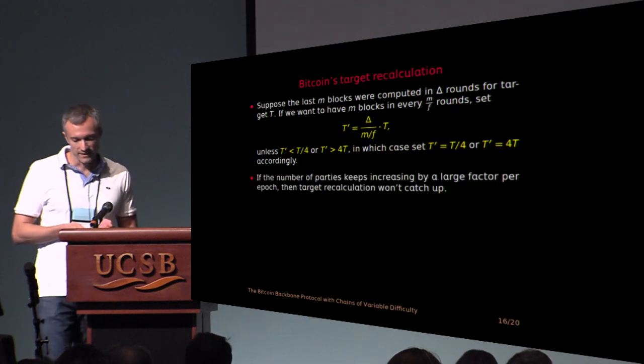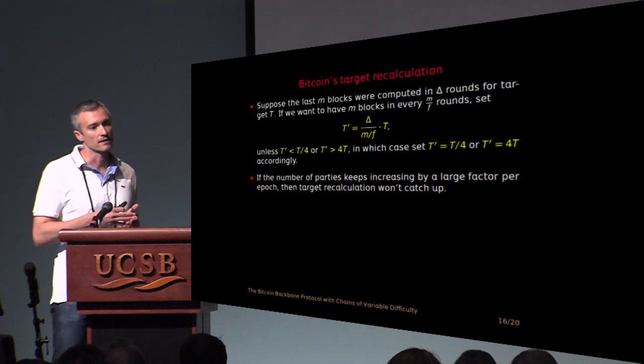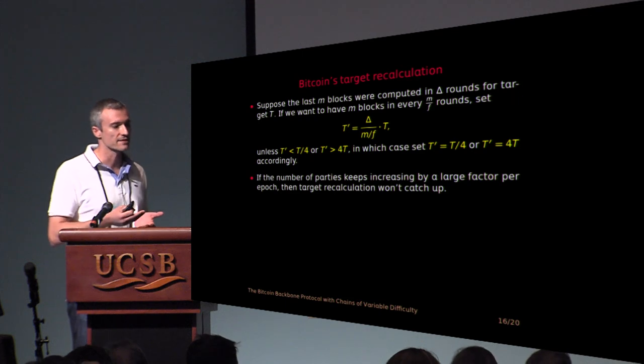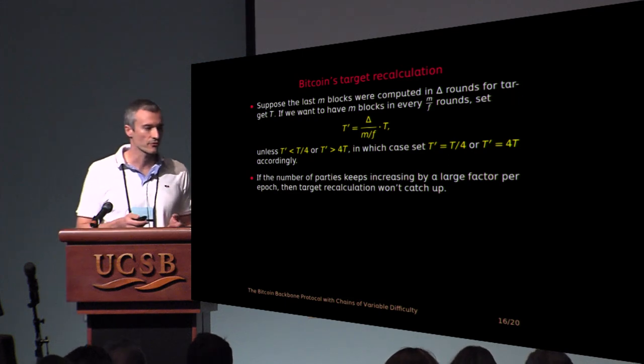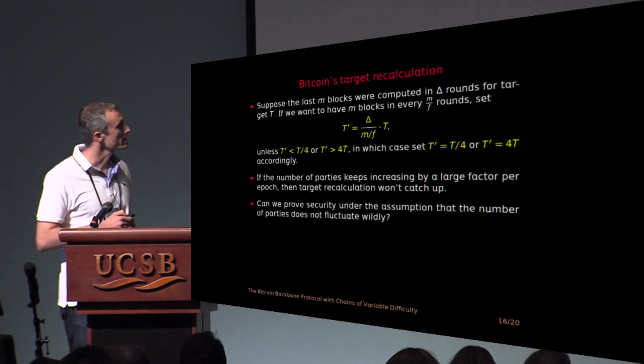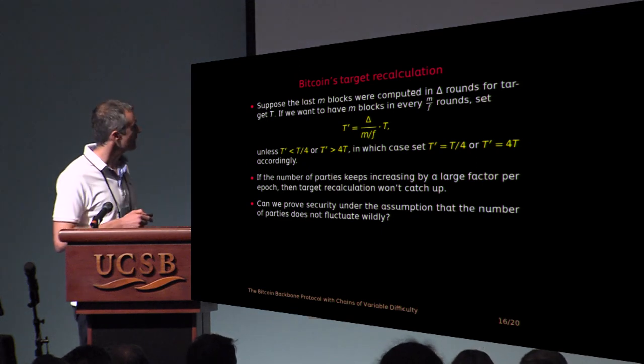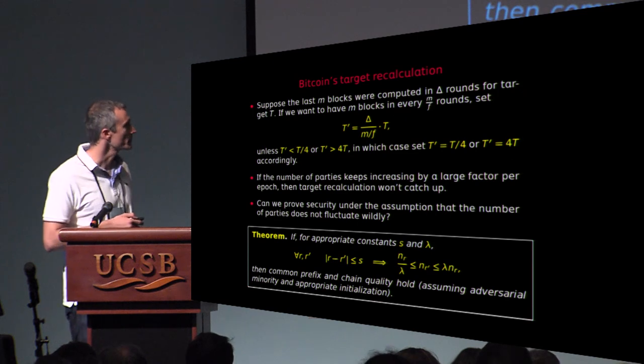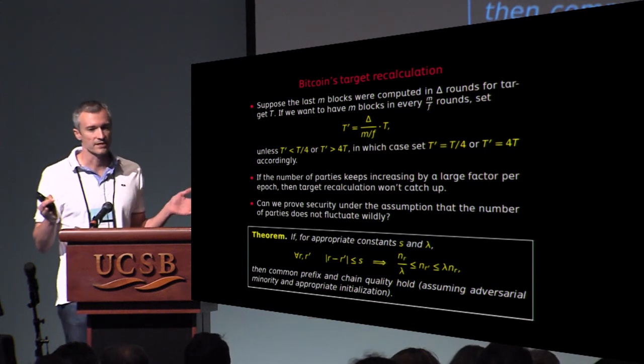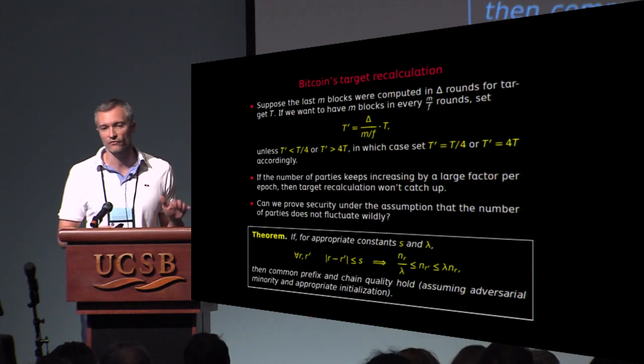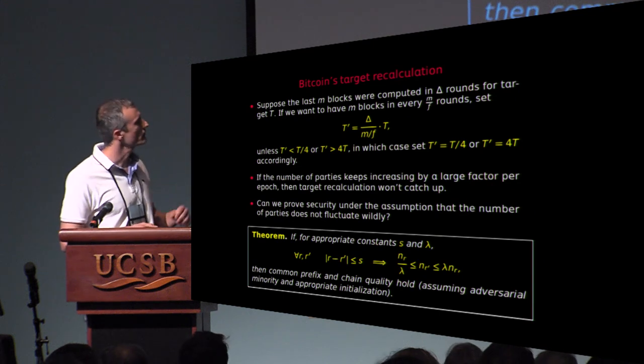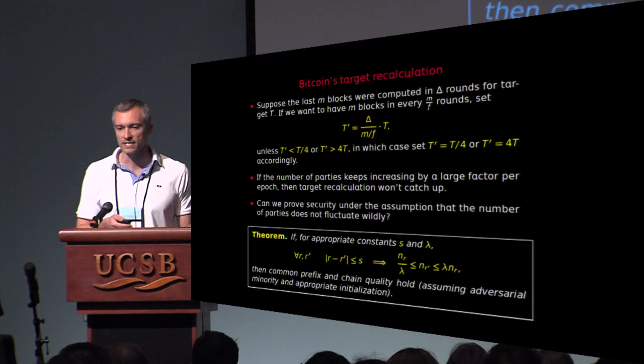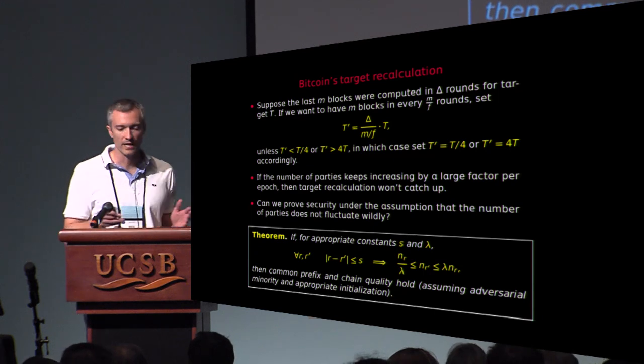The problem now that arises is that if the parties increase very quickly in, say, a period of an epoch, then target calculation won't catch up. So if they increase by a large factor and you just think that you are adjusting the target like they increased by four, in the end you're going to fall behind. And the question then is what kind of security can you prove in this situation? And it seems that you need to assume some bounds on the fluctuation of the number of parties. And the theorem we prove is like the following. We say that if in a certain number of rounds the number of parties do not fluctuate too much by a factor of lambda, then all the properties you want from Bitcoin still hold under, of course, the assumption that the adversary still has a minority of the hash power and that your initial parameters were set properly.